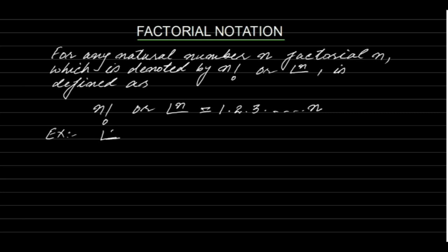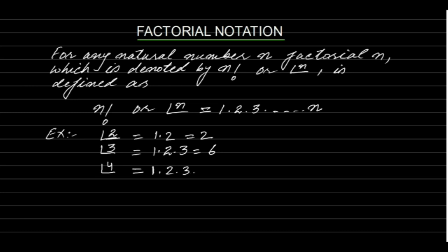For example: factorial 2 is 1×2 = 2; factorial 3 is 1×2×3 = 6; factorial 4 is 1×2×3×4 = 24; factorial 5 is 1×2×3×4×5 = 120, and so on.